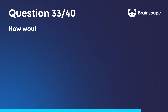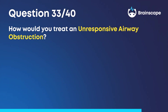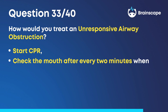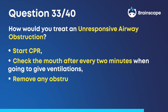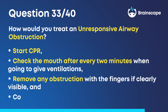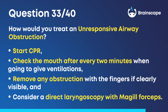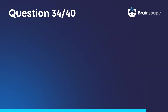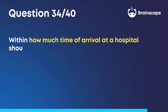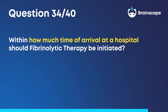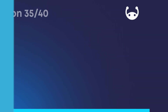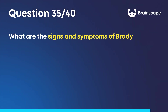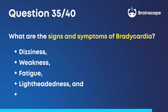Question 33: How would you treat an unresponsive airway obstruction? Start CPR. Check the mouth after every two minutes when going to give ventilations. Remove any obstruction with the fingers if clearly visible, and consider direct laryngoscopy with Magill forceps. Question 34: Within how much time of arrival at a hospital should fibrinolytic therapy be initiated? Within 60 minutes or one hour. Question 35: What are the signs and symptoms of bradycardia? Dizziness, weakness, fatigue, lightheadedness, and syncope.